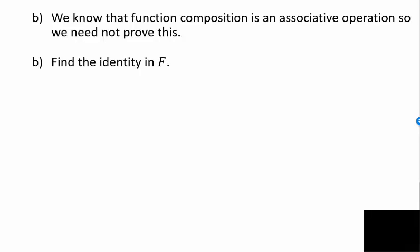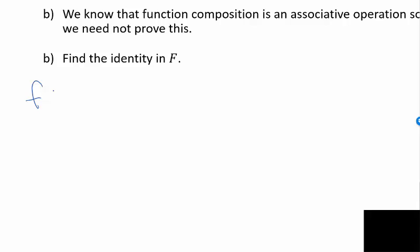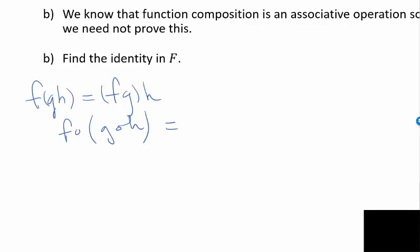We know that function composition is an associative operation, so we don't need to prove it. In multiplicative group notation, (FG)H = F(GH), which in function composition notation means (f∘g)∘h = f∘(g∘h). We know that is true for functions.